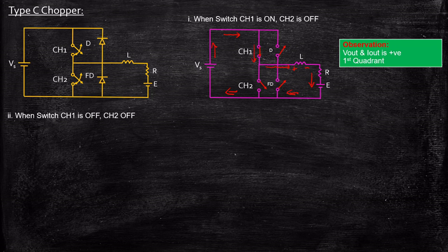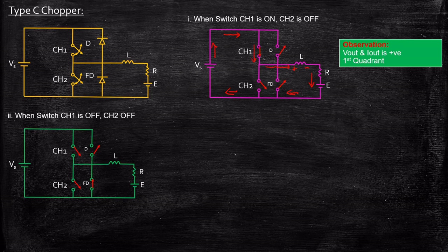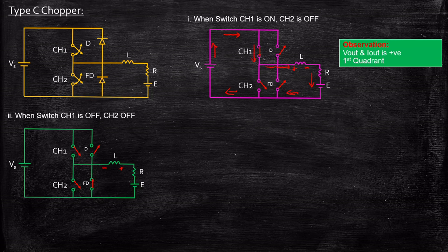Case 2: CH1 is off and CH2 is also off. The inductor that was storing energy with polarity plus and minus will reverse its polarity to minus and plus to prevent sudden change in current direction. Minus is now connected to the cathode of the freewheeling diode, so it is forward biased and acts as a short circuit. The current continues circulating through the freewheeling diode path only.